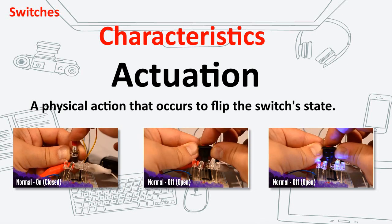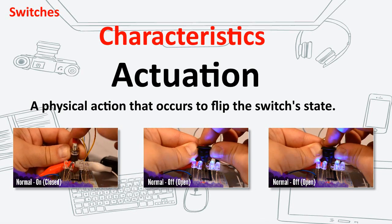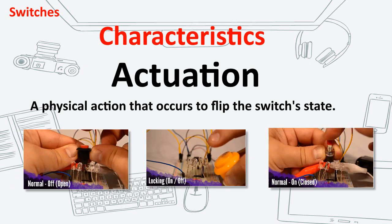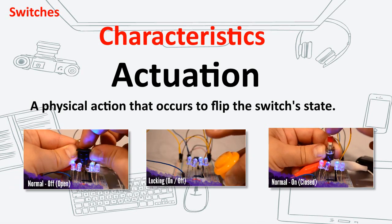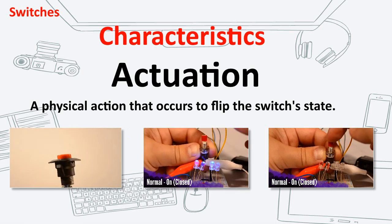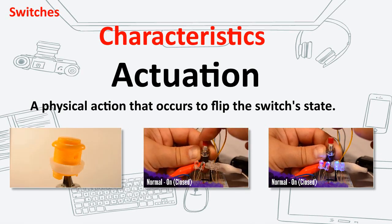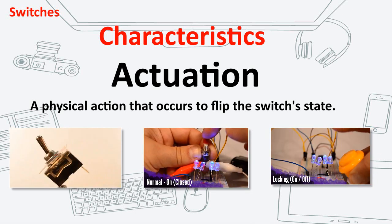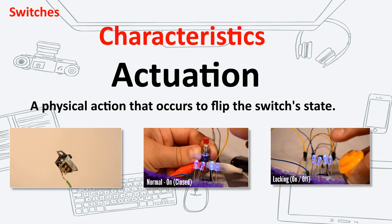Switch actuation can come from pushing, sliding, rocking, rotating, throwing, pulling, key-turning, magnetizing — any physical interaction which causes the mechanical linkage inside the switch to change contacts.